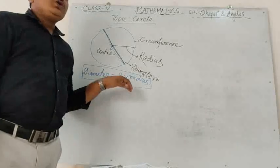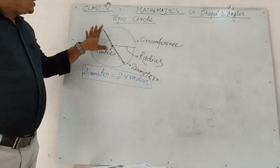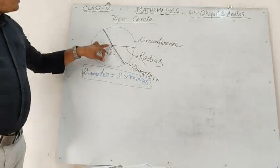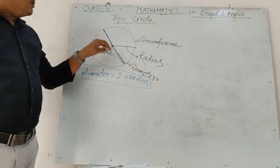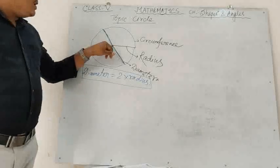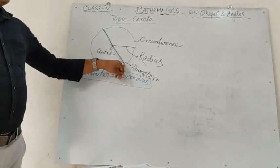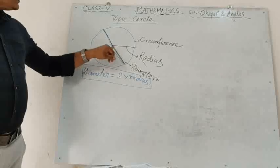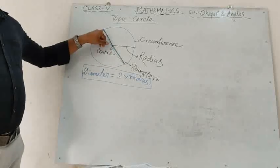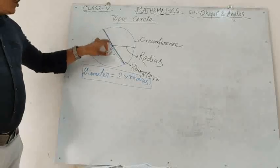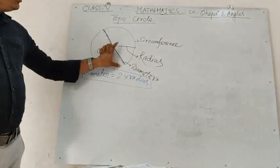Diameter equals 2 into radius because the total diameter — from the center, this part is the radius, and from the center the other part is also the radius. So one diameter equals 2 radii, therefore diameter equals 2 into radius.